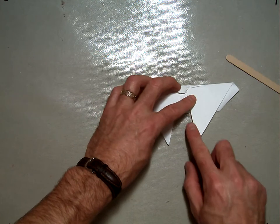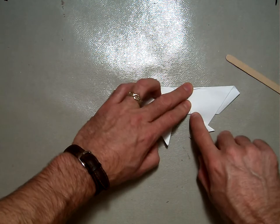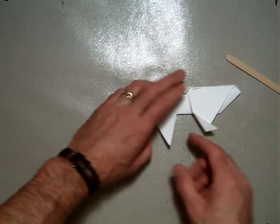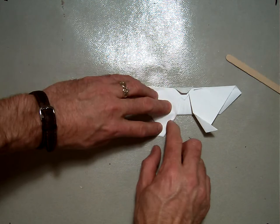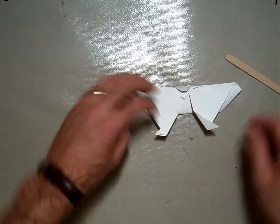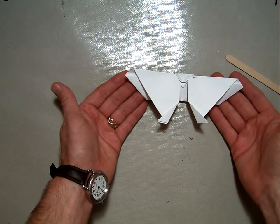And then just for one more detail if you want to you can take this corner here and fold it over in a valley fold. So you have a little teeny wing poking out there and fold this one over into a valley fold and have that little teeny wing poking over there. And so that is how you make an origami butterfly.